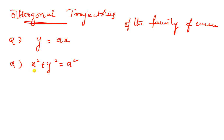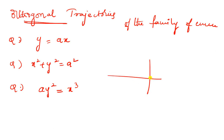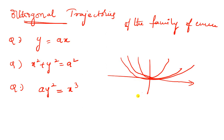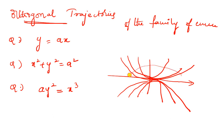This is a semi-cubical parabola. I will show you that — Ay-squared equals x-cubed. This is a semi-cubical parabola. For example, if this is the coordinate axis, you will be having parabolas like this. We have dotted lines for the orthogonal trajectories.